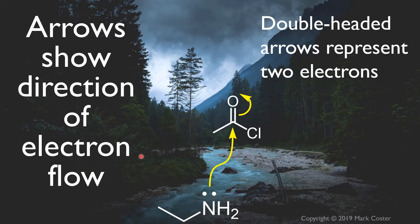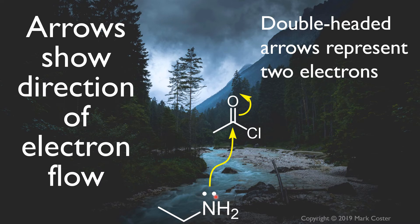Rule number three: curved arrows show the direction of electron flow, like a river. The source of the river in the case of curved arrows is a pair of electrons, either from a lone pair or from a bond — remembering that a bond signifies a pair of electrons. That flows towards another atom to make a new bond. We can also break an old bond and make the electrons flow towards another atom, perhaps making a new lone pair, which might be associated with a negative charge. These double-headed arrows always represent two electrons, flowing from an electron source to an eventual electron sink. You might draw one, two, three, or more curly arrows in a particular reaction.